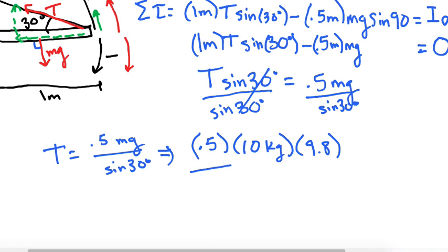9.8 divided by sine of 30. If we rewrite this, 10 times 9.8 is 98, of course, times 0.5.